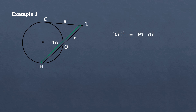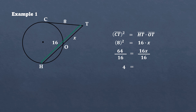The secant segment is line HT multiplied by the external segment OT. Substituting the given values: for tangent segment CT we have eight squared. Eight squared equals 64, which equals 16 times X, giving us 16X. To find X, we divide both sides by 16: 64 divided by 16 equals 4, and 16X divided by 16 equals X. Therefore, X equals 4, meaning the length of the external secant is 4.